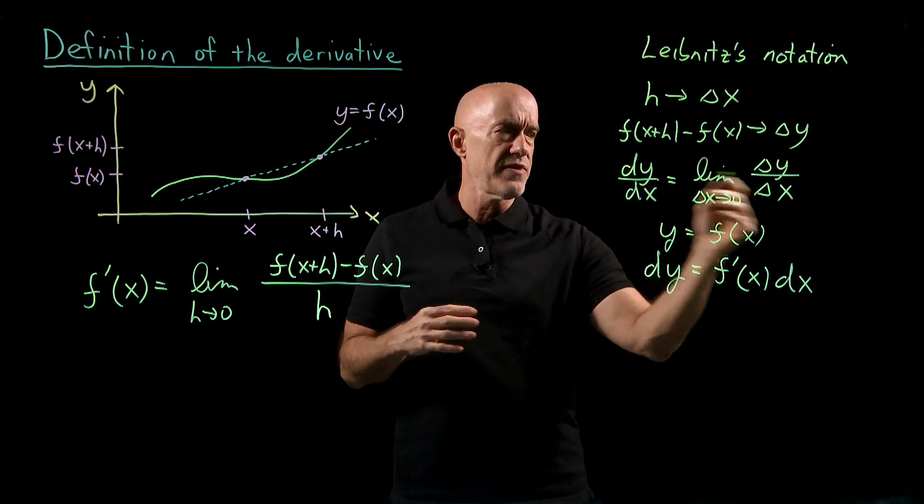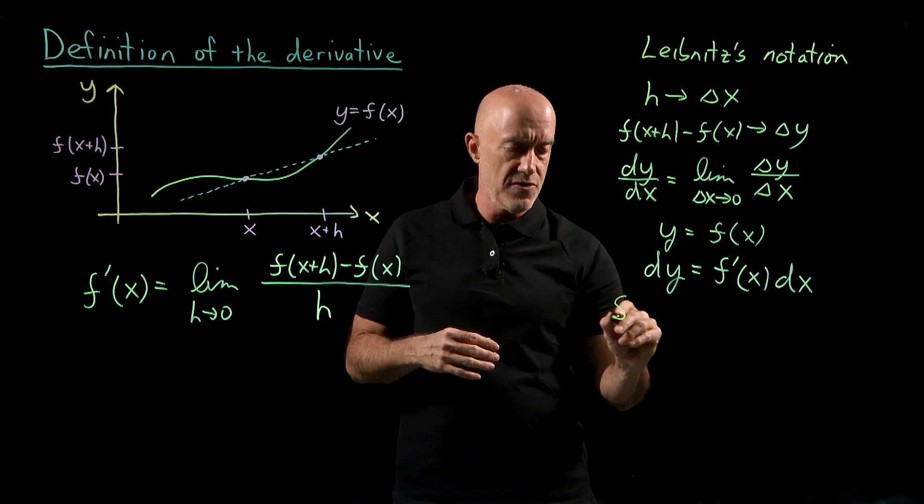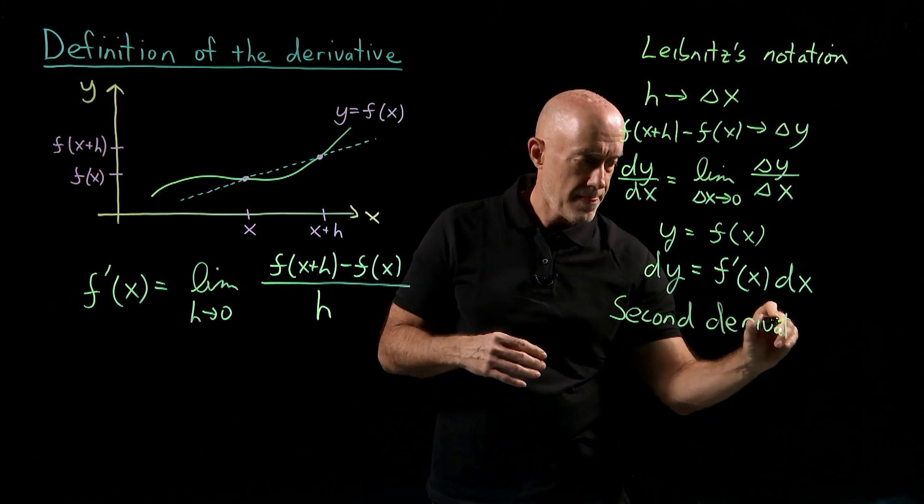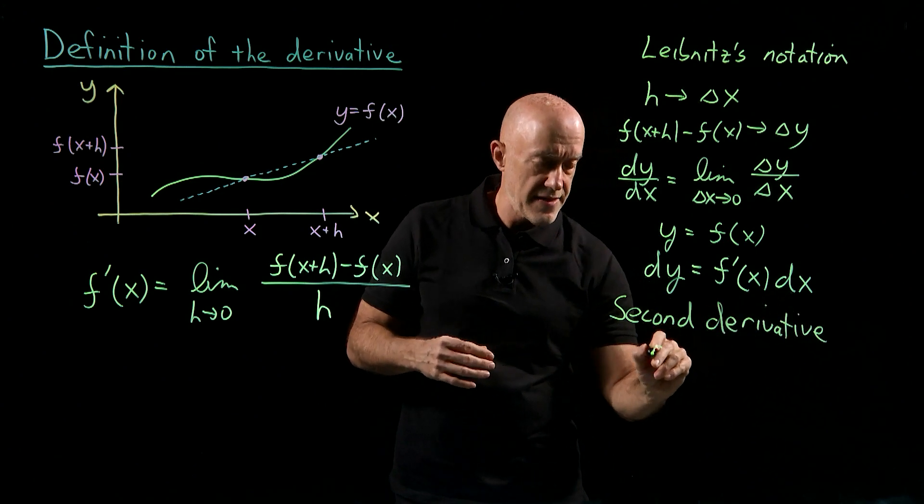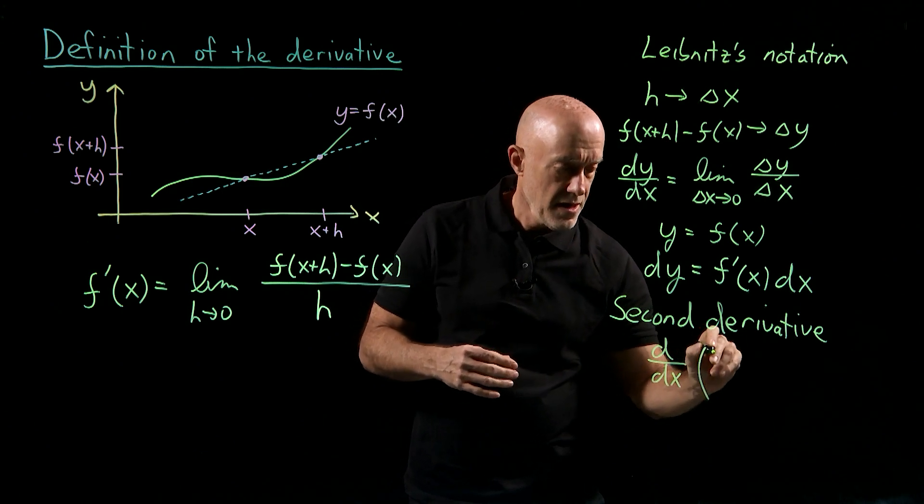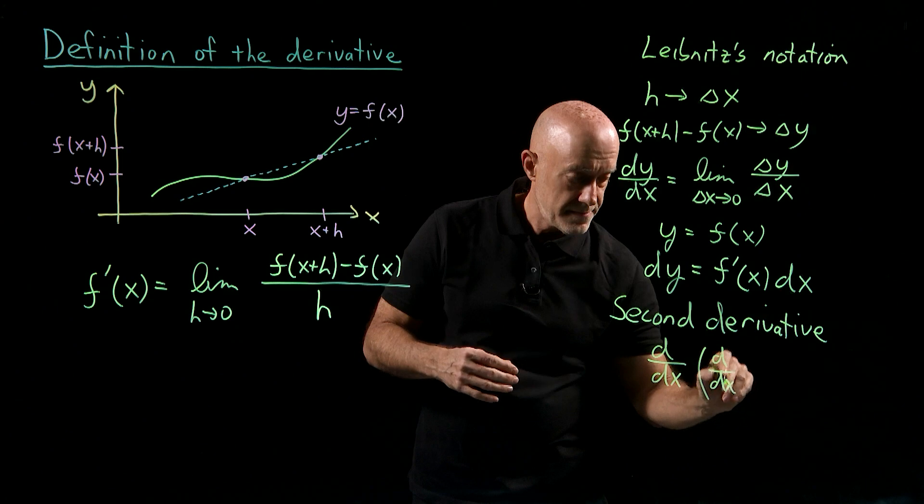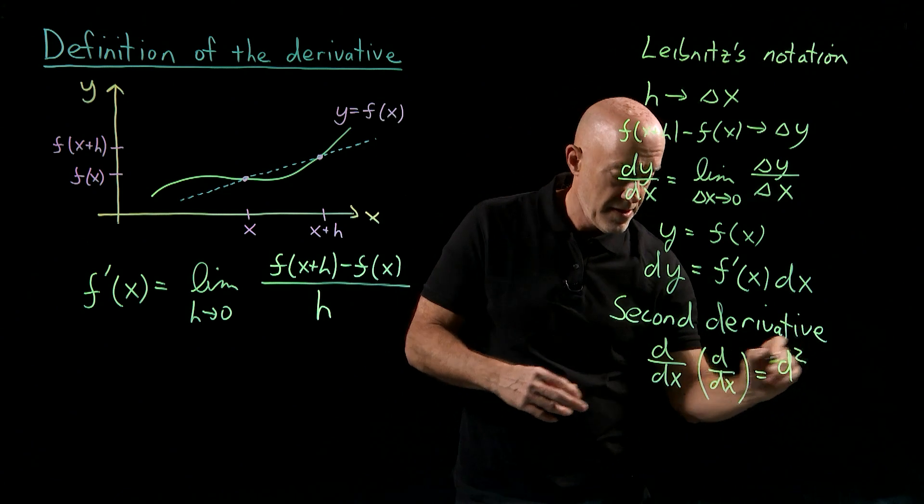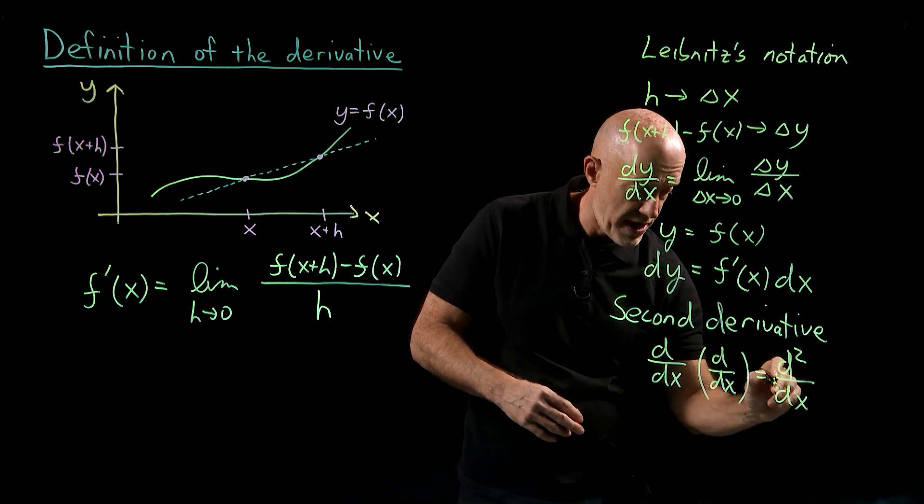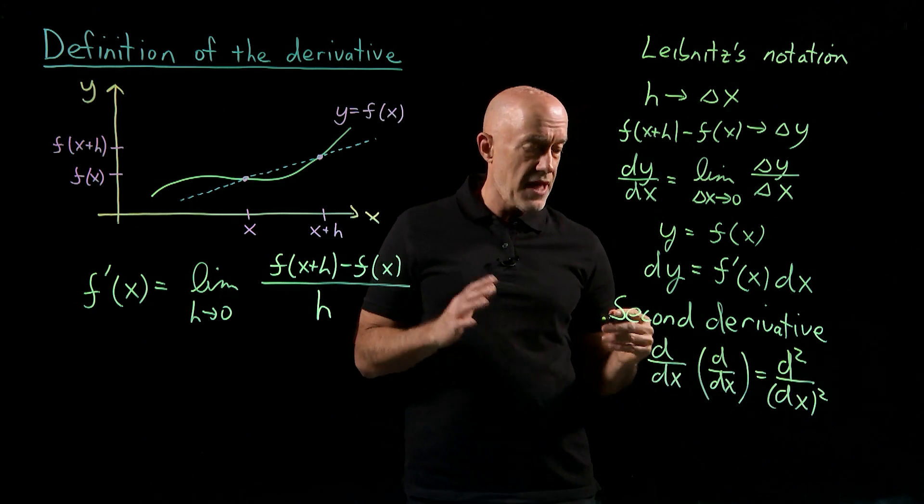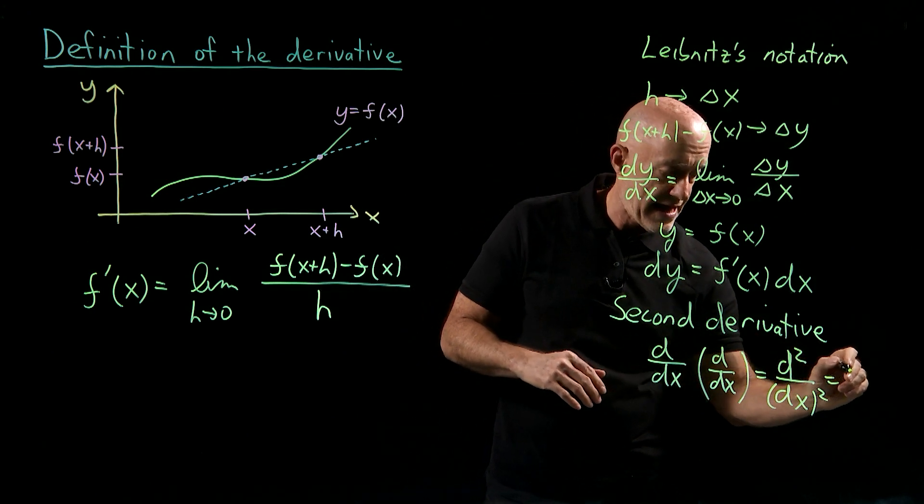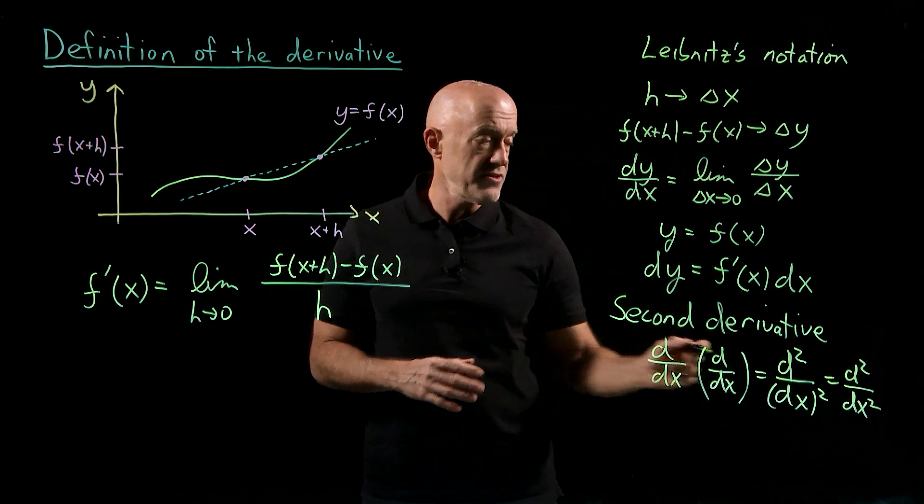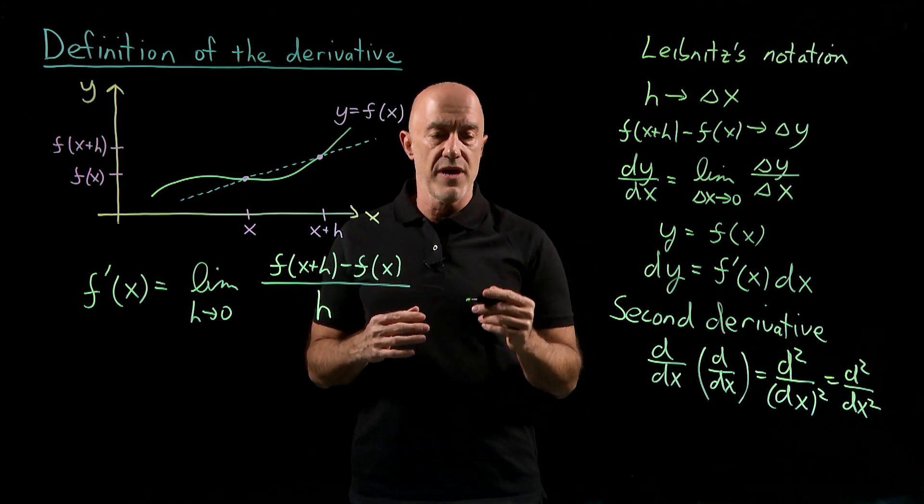We can also take the second derivative if we use the Leibniz's notation. So for the second derivative, we would take the d dx of d dx. And what does that look like? Well, that looks like a d squared over dx squared. And in the Leibniz's notation, we simply write that as d squared dx squared. So we write the second derivative as d squared dx squared.